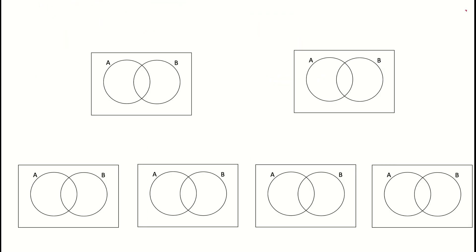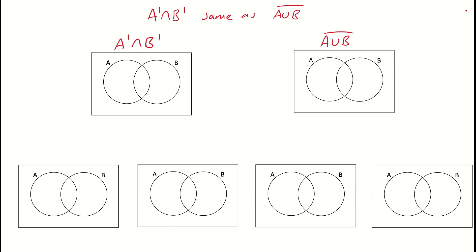We'll look at another example now. Here we're going to try a question where we see: is A prime intersect B prime the same as the complement of A union B? The reason we might want to work this out is that in higher levels of mathematics, when we think about different situations and count them, we can think of them in different ways. So it's really important to be able to think of things differently and see if these are in fact identical. We'll use some Venn diagrams to help solve this problem.